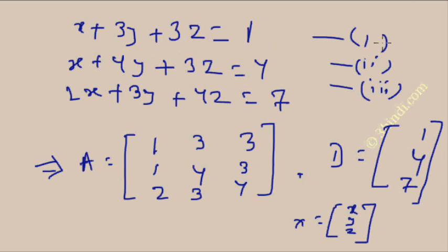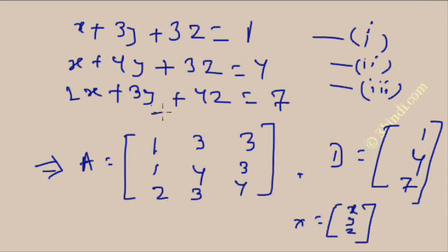Suppose we have three equations: x + 3y + 3z = 1, x + 4y + 3z = 4, and 2x + 3y + 4z = 7. You have to solve this system and find out the values of x, y, and z.